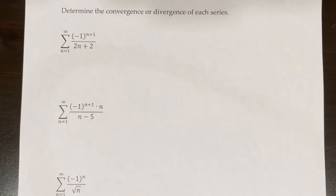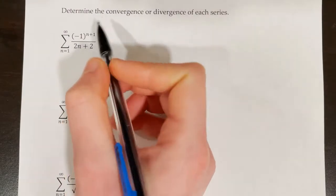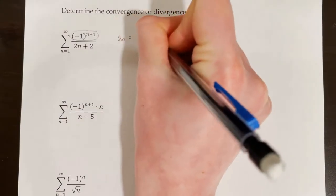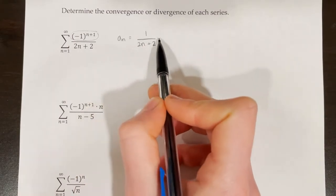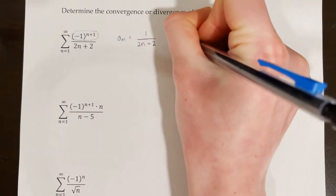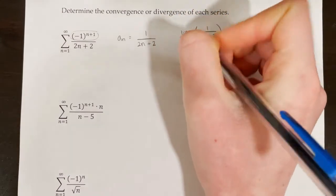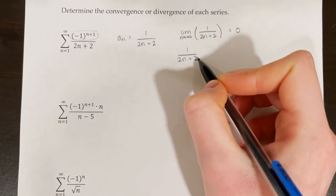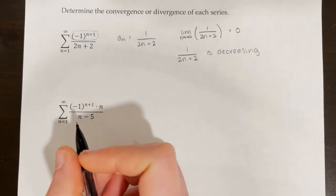Determine the convergence or divergence of the series from n equals 1 to infinity of negative 1 to the power of n plus 1 over 2n plus 2. The alternating factor is negative 1 to the power of n plus 1, so a sub n equals 1 over 2n plus 2. The limit as n approaches infinity of 1 over 2n plus 2 equals 0. Plugging in larger values — n equals 1 gives 1 fourth, n equals 2 gives 1 sixth — so a sub n is decreasing. Both conditions are met, so the series converges by the alternating series test.